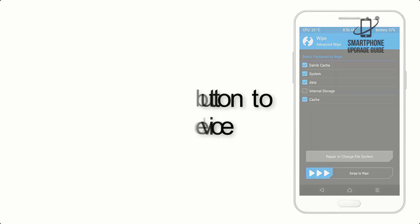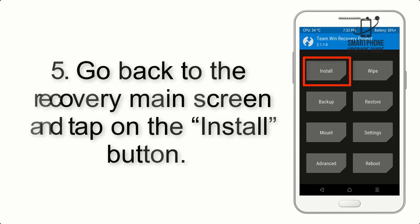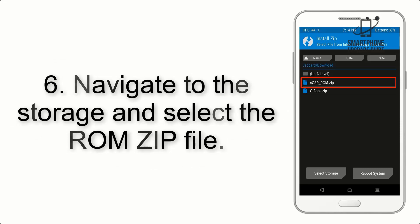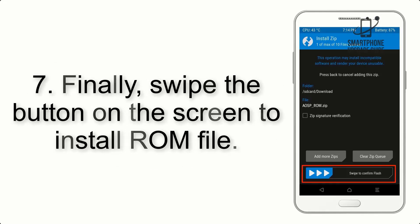Step 4: swipe the button to wipe the device. Step 5: go back to the recovery main screen and tap on the Install button. Step 6: navigate to the storage and select the ROM zip file.